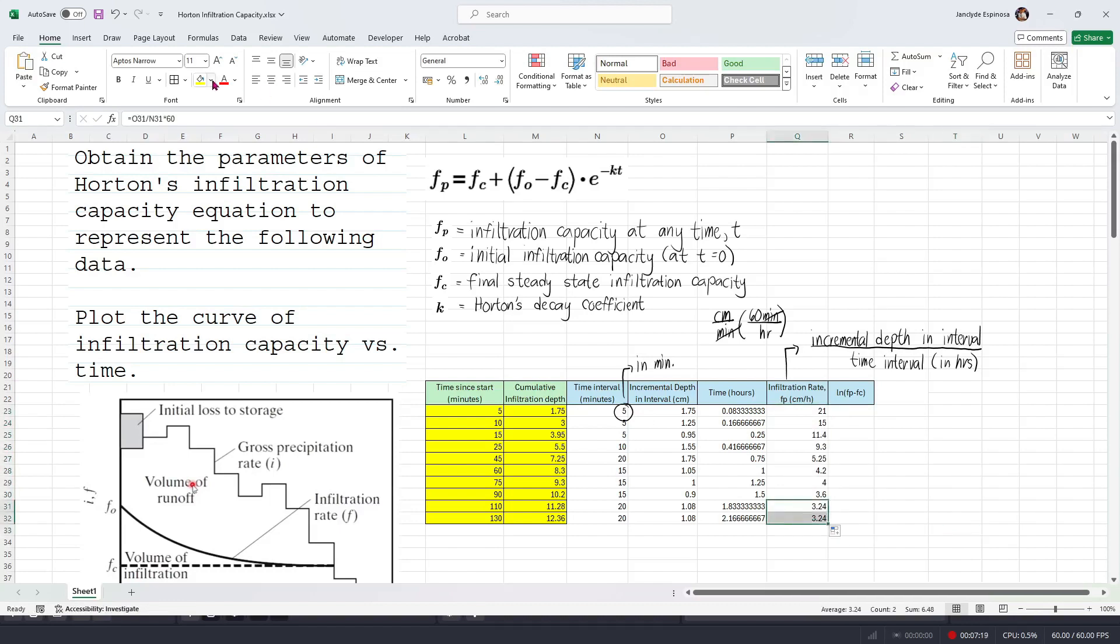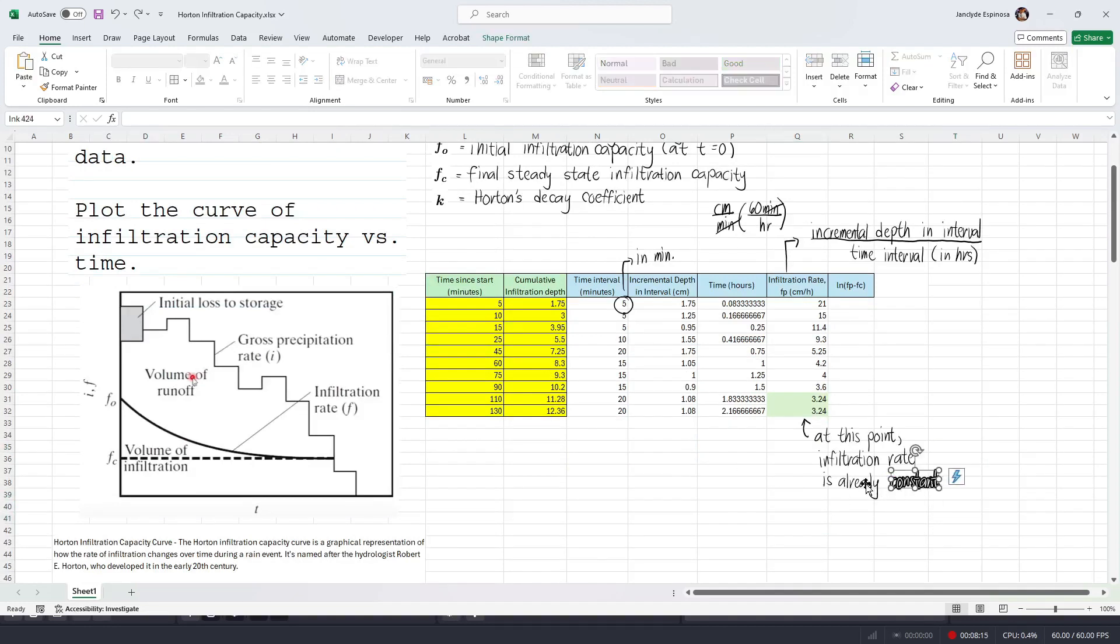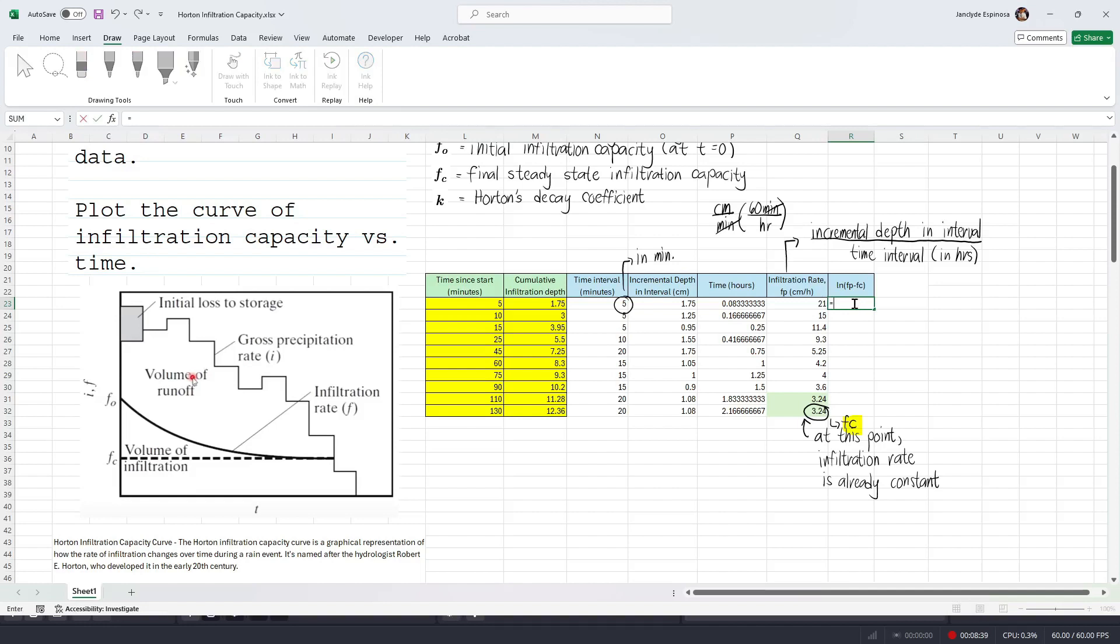Now, for the last column, we're gonna define ln of FP minus FC. In our definition, FP is the infiltration capacity at any time t, while FC is the final steady state infiltration capacity where the infiltration capacity already becomes constant. Now, looking at the infiltration rates, in the last two rows, the infiltration rate, FP, has already achieved a steady state as it is 3.24 for both of the rows. Therefore, 3.24 is the steady state infiltration capacity considering our data. And so, we're gonna type in ln of FP minus FC. And then, since FC is a constant term, we're gonna use a fixed cell reference. And so, to do that efficiently, instead of adding dollar signs before the letter and the number, just highlight the cell and then press F4. It will automatically add the dollar signs for you. And so, we're gonna drag this down. And then, notice that for the last two rows, we have an indeterminate number because ln of 0 is undefined. So we're just gonna remove that.